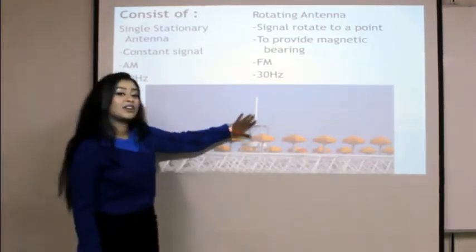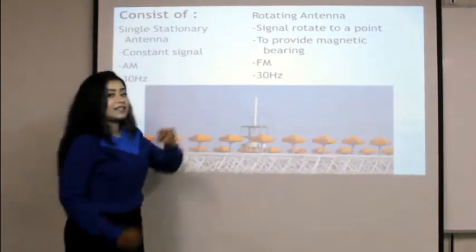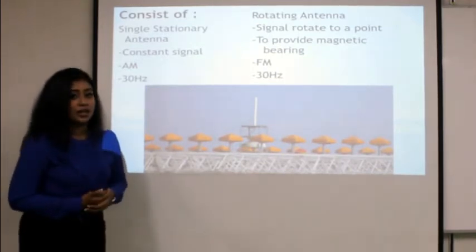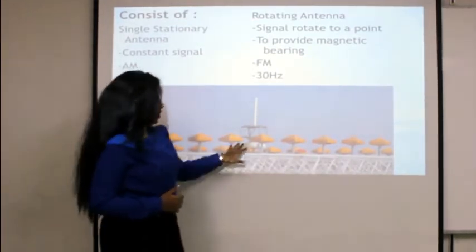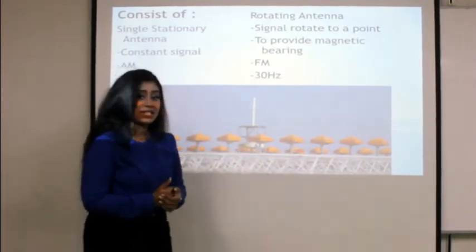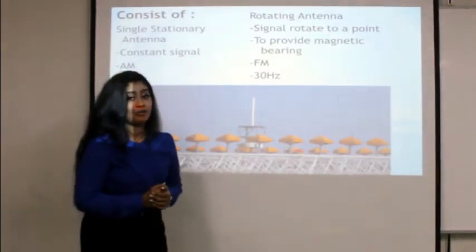As you can see here, this is the constant antenna and this is the rotating antenna. The constant antenna provides a frequency of 30 hertz, and the rotating antenna provides the magnetic bearing to the pilot and also produces a frequency of 30 hertz.